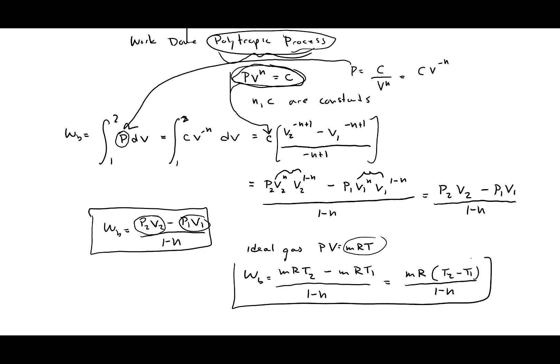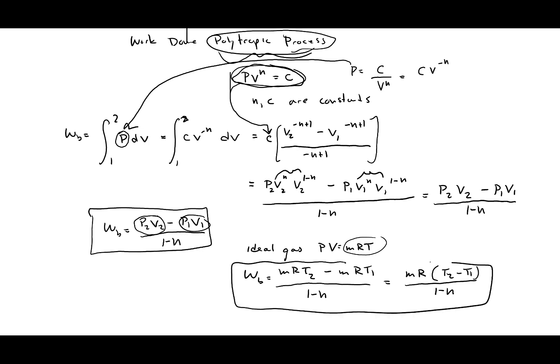This would be the boundary work for an ideal polytropic gas. One thing to notice is that if N equals 1, we end up dividing by zero, which we can't do. So this equation only applies when N does not equal 1. Same goes for the ideal gas form.